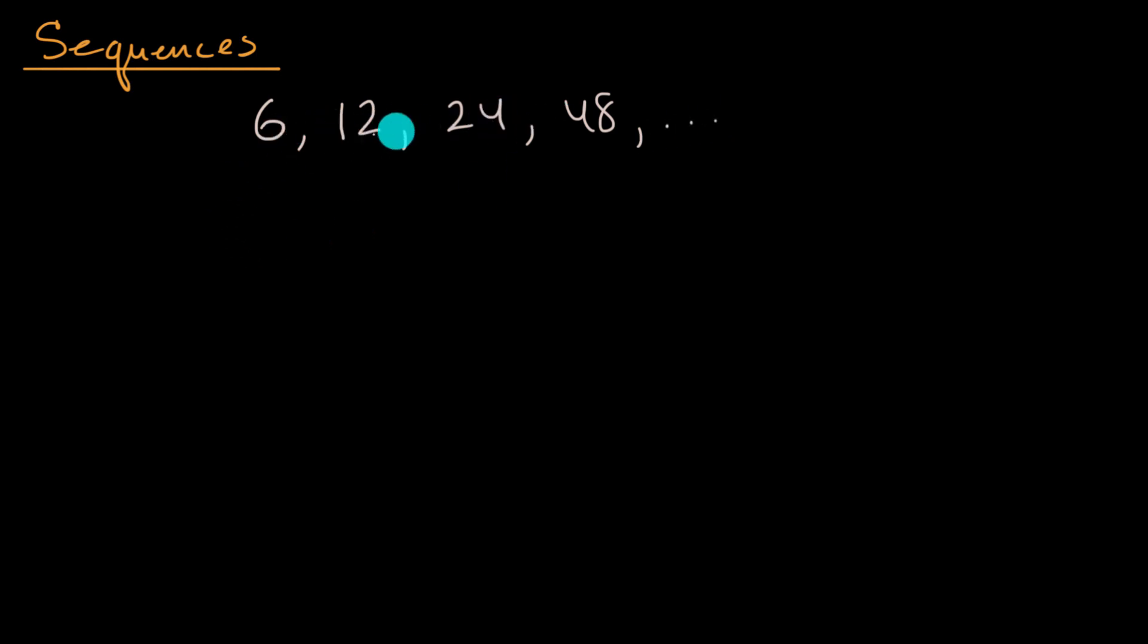As we'll see, there's multiple function definitions that could create the sequence. One way to think about it is this is six times one, this is six times two, this is six times four, this is six times eight. So it looks like each term is six times a power of two.